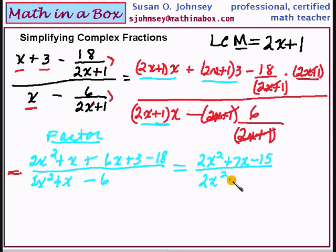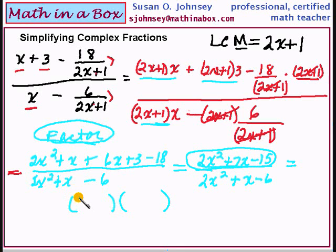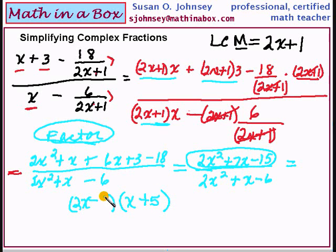Now we are ready to factor these. We cannot divide — you may not divide out until you have factored. I am looking at the numerator: we are going to factor 2x squared plus 7x minus 15. This is another skill that you should already know how to do well. We need a negative 15 on the end. That will give me the negative 15, and it is also going to give me the positive 7x. If you multiply this out, you will get a positive 7x.